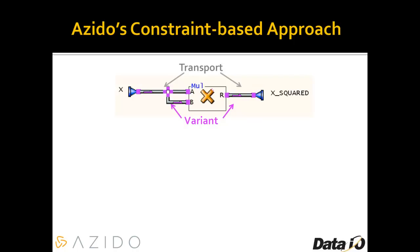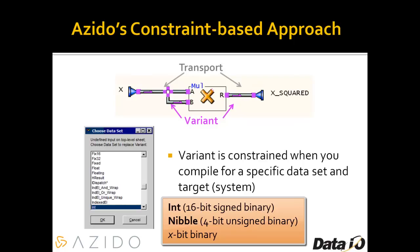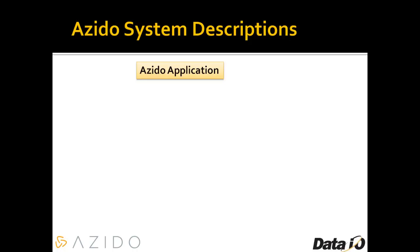Another key aspect of Azito is a data type called the variant, meaning that you don't know or don't care what the type is at the moment. You know you want to take that value, multiply it by itself to create the output. You don't constrain the data type until you actually compile the application for a specific data set and target system. For example, you could compile it for an integer, a nibble, or an X-bit binary number — pick a number: 27, 256 bits, you name it. This means Azito library elements are polymorphic, meaning the implementation you get depends on the data types feeding it. The library element can adapt to whatever data types feed it or come out of it.